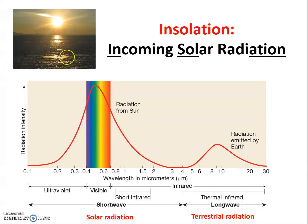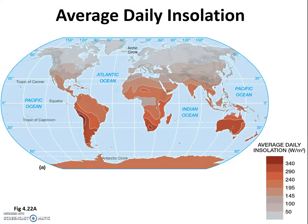Collectively, we have a name for all the incoming solar radiation that comes from the Sun — we call it INSOLATION: Incoming Solar Radiation. It's essentially an acronym. Please note that this is not insulation, the stuff you put in the walls of your house. It's INSOLATION with an O, and it stands for incoming solar radiation. Soon we will be looking at maps showing how insolation varies from place to place on Earth.